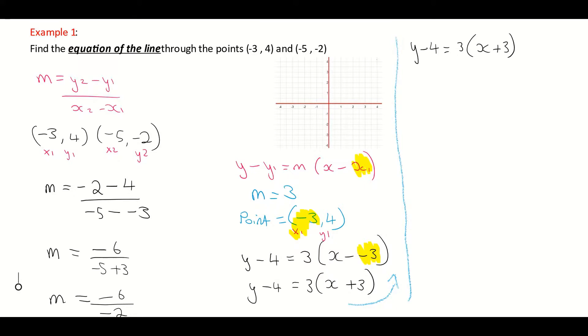Next thing I'm going to do is I'm going to multiply in that 3. So when I multiply the 3 into the bracket, I get y minus 4 is equal to 3 times x, which is 3x. 3 times positive 3 is 9.